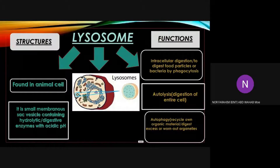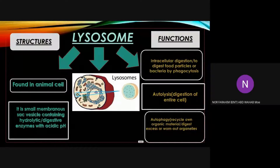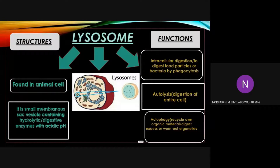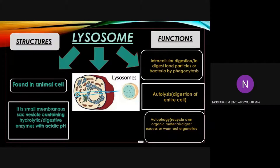Farah presents: lysosomes appear naturally as spherical bodies about 50 to 70 nanometers in diameter, bounded by a single membrane, and can be found in animal cells. Their structure is a small membranous sac vesicle containing hydrolytic or digestive enzymes with acidic pH. Lysosome enzymes are made by proteins from the ER and enclosed within vesicles by the Golgi apparatus. Functions include intracellular digestion of food particles or bacteria by phagocytosis, autolysis — digestion of entire cells — and autophagy — recycling of worn-out organelles.